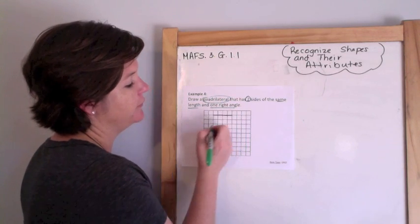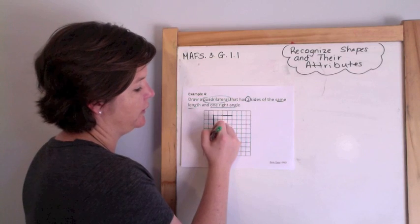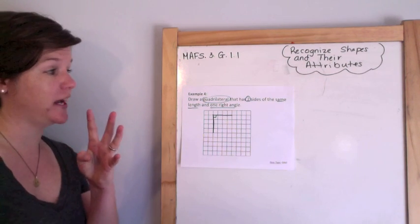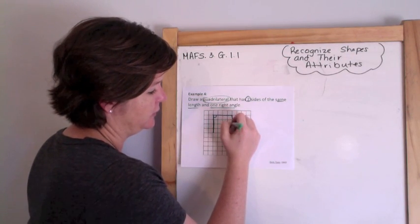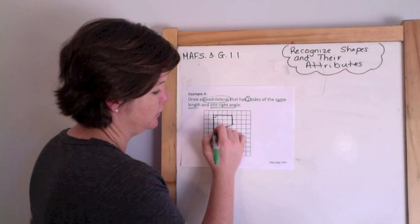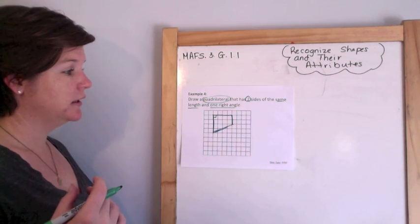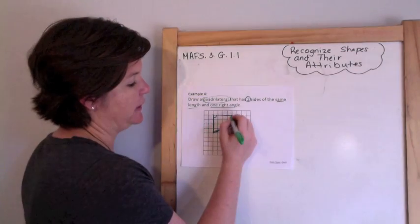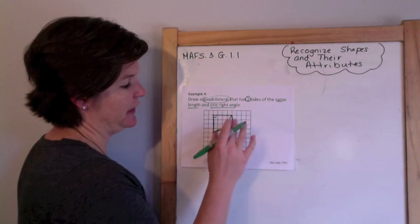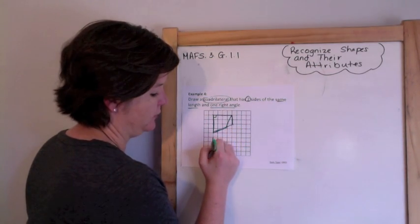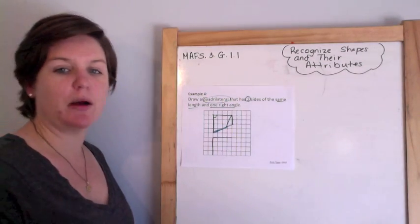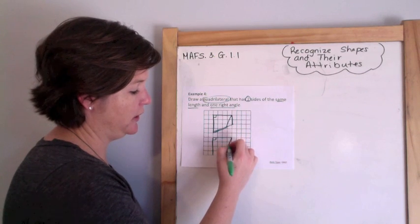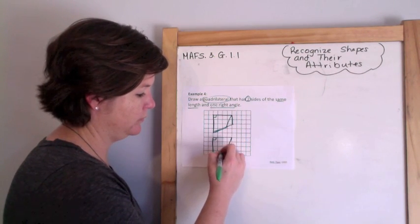I'm going to draw two sides the same length and make those two sides meet at a right angle. There's my right angle, I have my two sides the same length. But I need to make this a quadrilateral, so I need to have four sides. It needs only one right angle, so if I had an eraser I would erase that and make it look more like this. Obviously, if this were a test problem, I would erase it all the way and not draw two, but I want to show you, because I messed up, I made a mistake here, and I put two right angles when it only needs to be one.